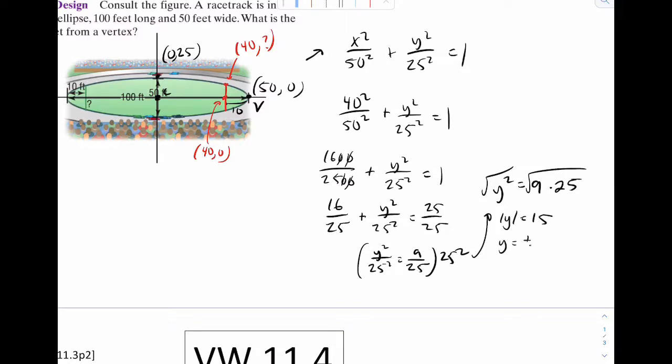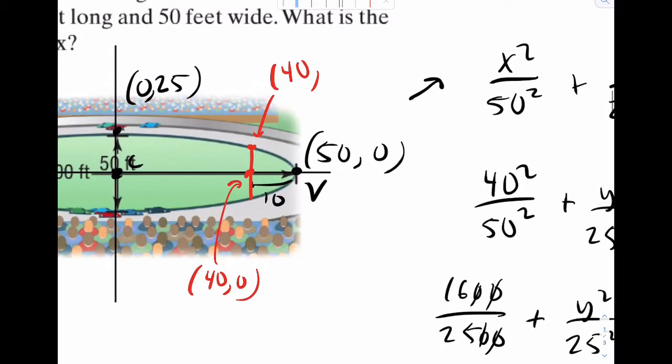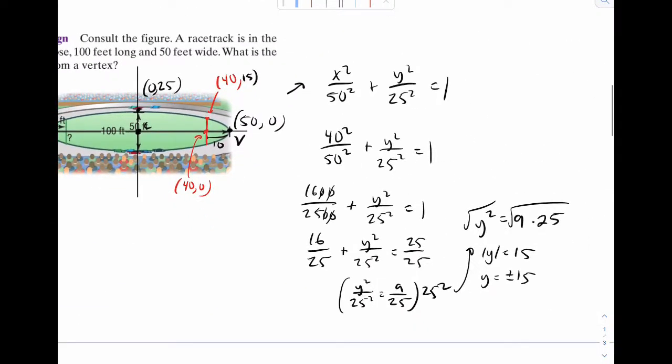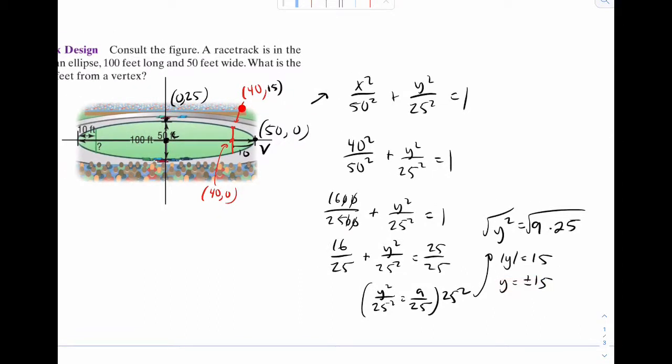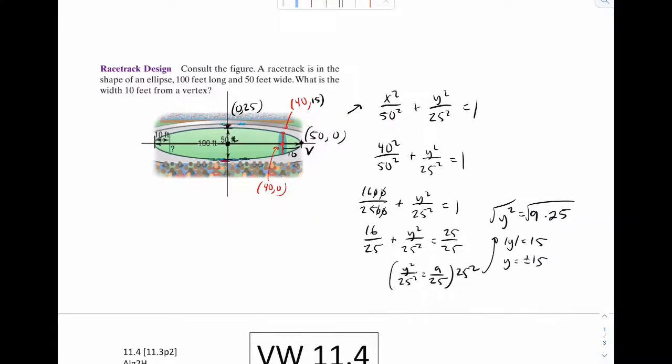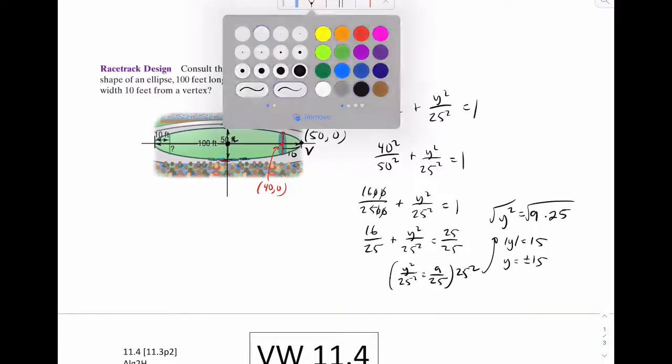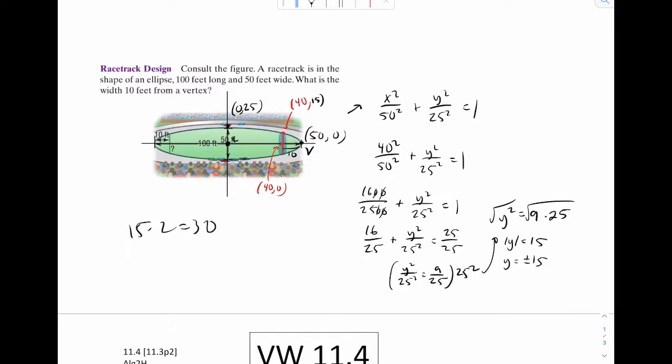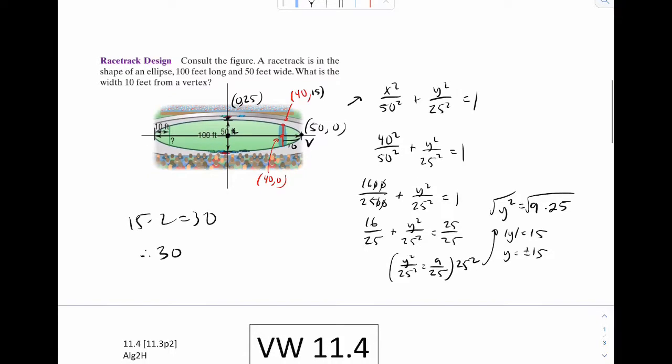So I can see the absolute value of y should be 15. So y is plus or minus 15, which makes sense, because there's two coordinates here. Which means I just found this coordinate right here. This is 40 comma 15. Now your inclination might be to write 15 as the answer. But the question is saying, what is the width? So you want this entire width here. What we just found is this coordinate is 40, 15. So just take this 15 times it by 2. And you get 30. So 30 feet would be your width.